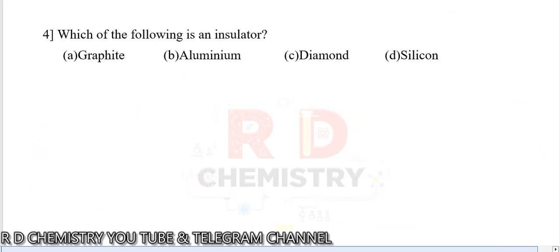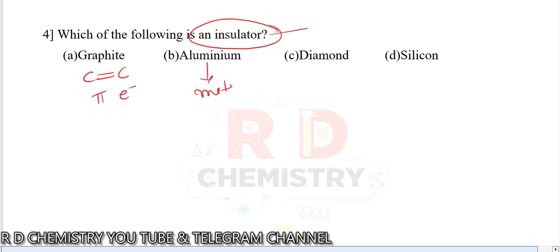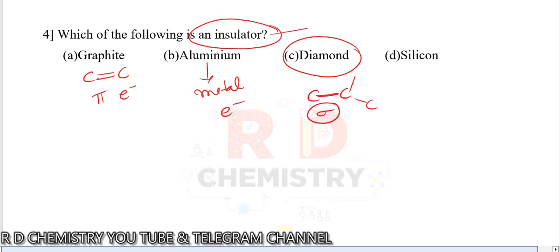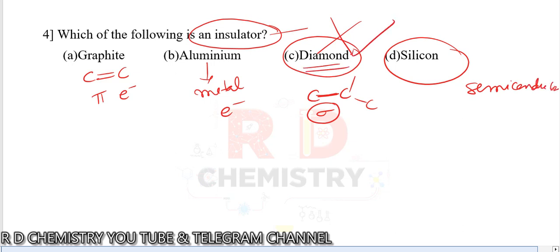Question 4: which of the following is an insulator? Graphite has free mobile pi electrons. Aluminum is a metal that conducts via electron movement. Diamond has carbon-carbon single sigma bonds that cannot break, so it cannot conduct electricity. Silicon is a semiconductor. Therefore diamond is the answer — it does not conduct electricity.